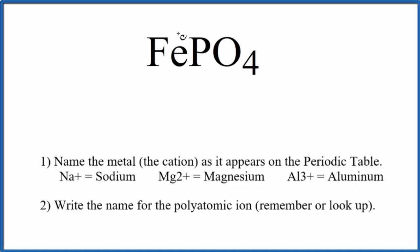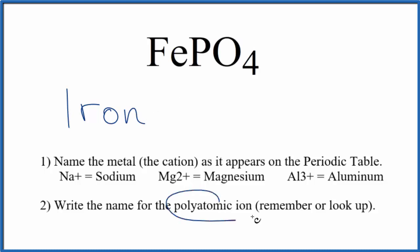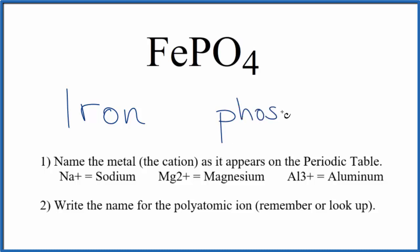Let's first write the name for the metal — that's the Fe, which is just iron. Then we write the name for the polyatomic ion. This is PO4, phosphate, lowercase p. So far, we have iron phosphate as the name for FePO4.